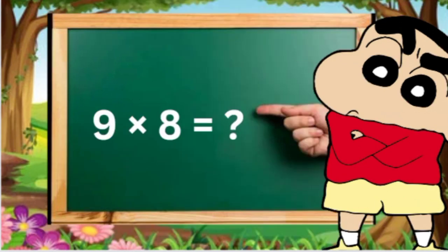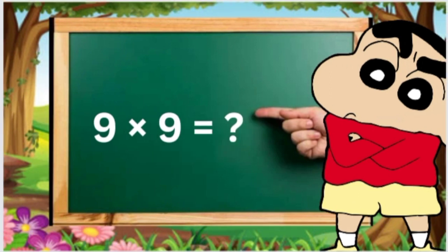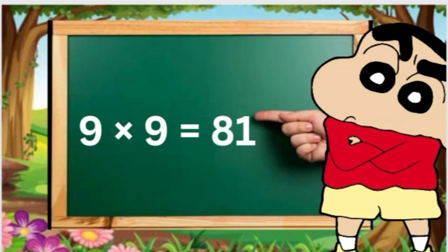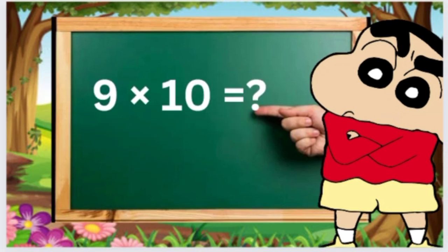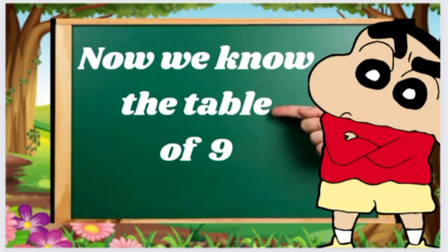Nine eights are seventy-two, nine nines are eighty-one, nine tens are ninety. Now we know the table of nine.